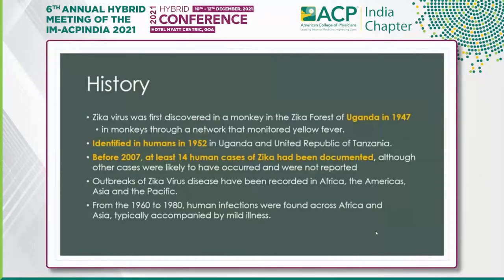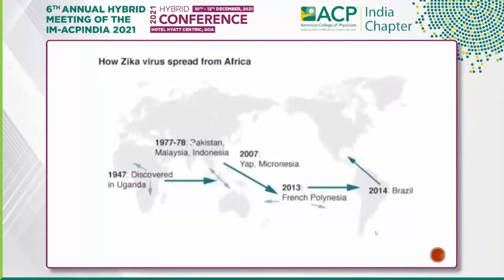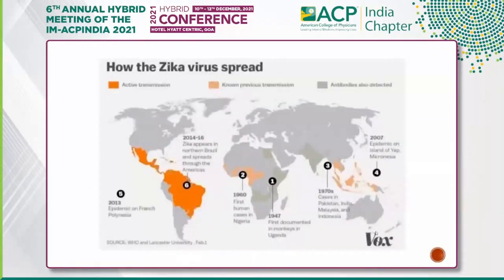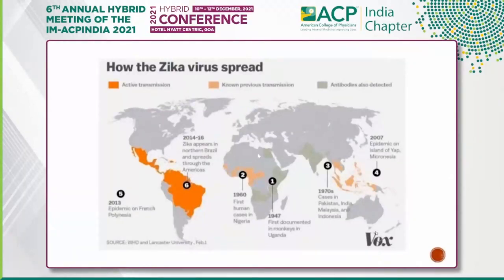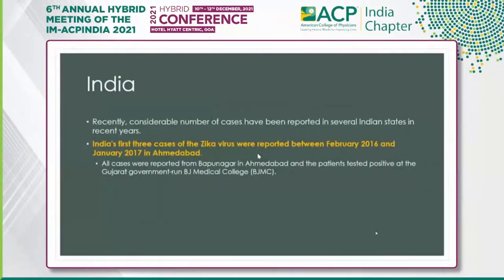In 2014 to 2016, there was a huge outbreak of Zika virus infection in South America, particularly Brazil and many other countries. This shows how Zika virus spread from Africa to many Asian and South American countries. The first documented human case was in Nigeria in 1947; by 1970, cases appeared in Pakistan, India, Malaysia, and Indonesia. In 2014–2016, outbreaks occurred across North and South America, particularly Brazil and Costa Rica.